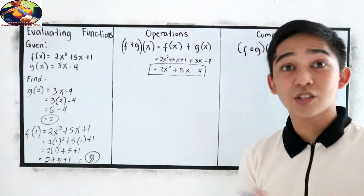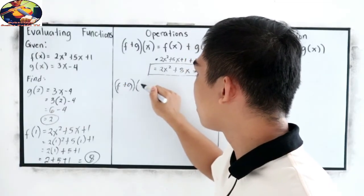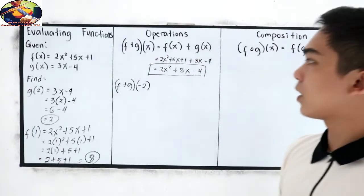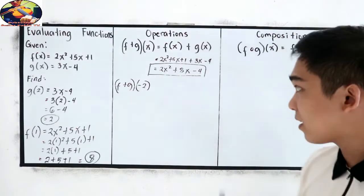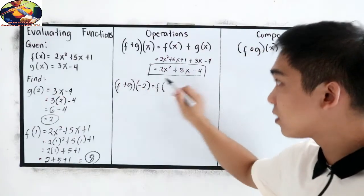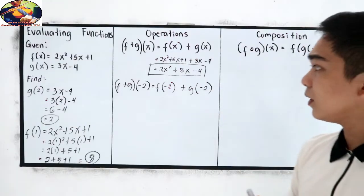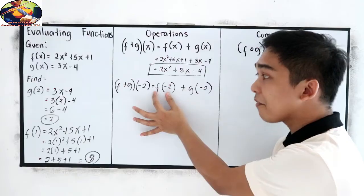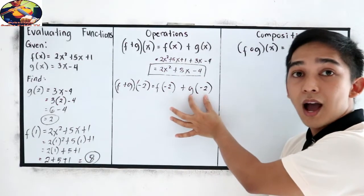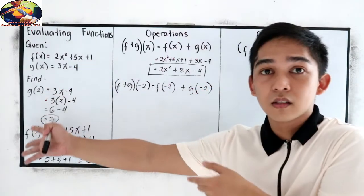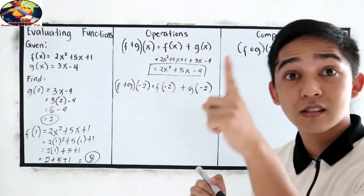What if the question is: find (f + g)(−2)? We're going to find (f + g)(−2), which equals f(−2) + g(−2). That means we find f(−2) first, then add g(−2). This connects to our previous lesson on evaluating functions.